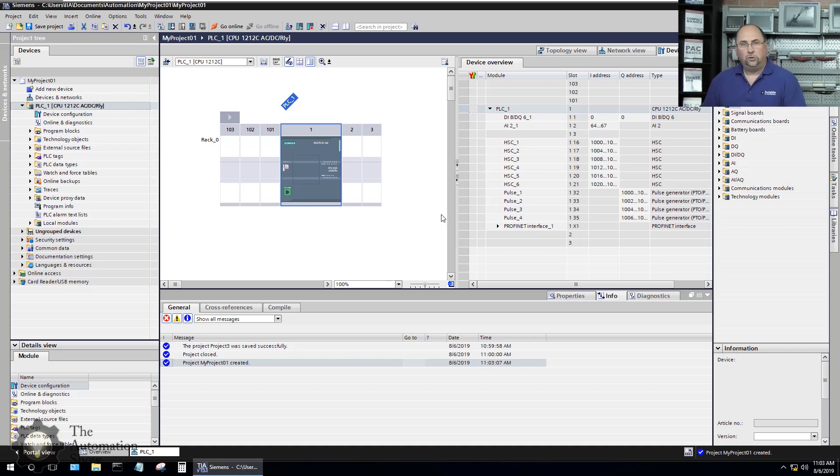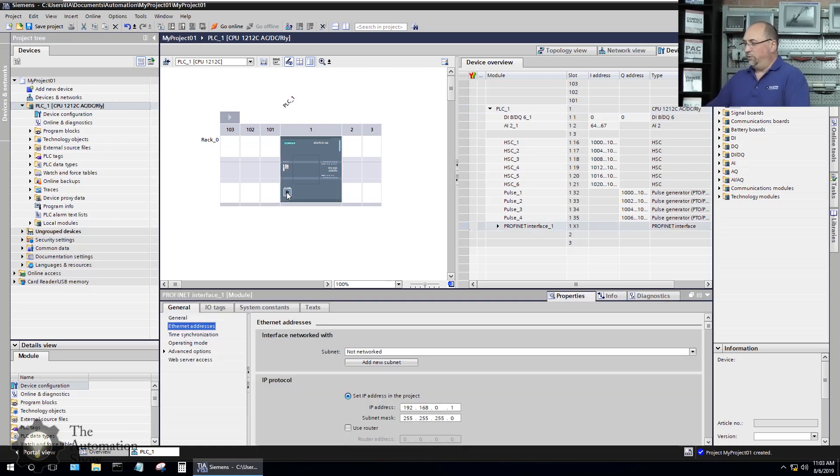OK, here we are. Now, the first thing I'm going to do so I don't forget is I'm going to assign the Ethernet address here. So let me click on the Profinet port. And you can see down here, I'm just going to put in 1.112. That's the address I've chosen on my subnet for this device.